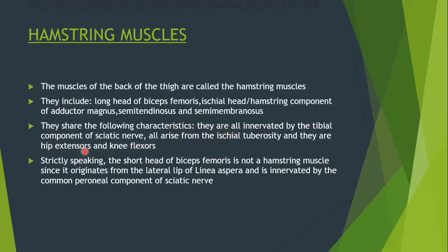If a muscle has all those characteristics it qualifies as a hamstring muscle. The short head of biceps femoris is not a hamstring muscle, since biceps means two heads and the short head originates from the lateral lip of linea aspera — unlike the other hamstrings which originate from the ischial tuberosity. It is also innervated by the common peroneal component of the sciatic nerve, unlike the others which are innervated by the tibial component.